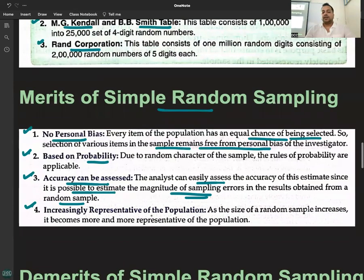Increasingly representative of the population. As the size of a random sample increases, it becomes more and more representative. The rule is that the larger the sample size, the more accurate the results.